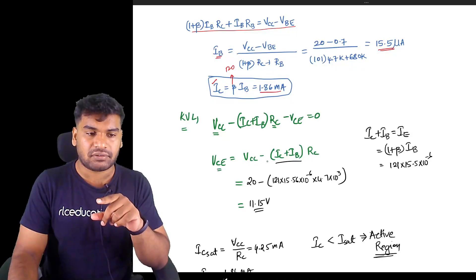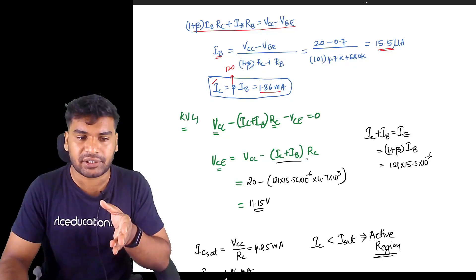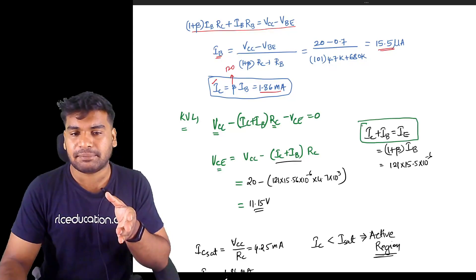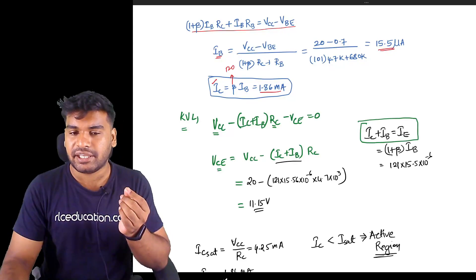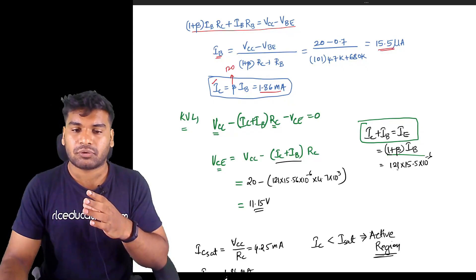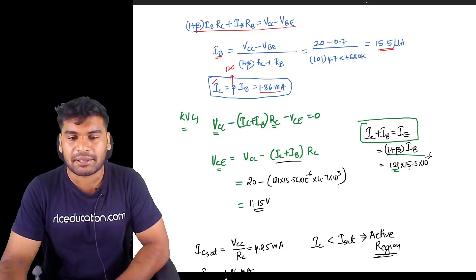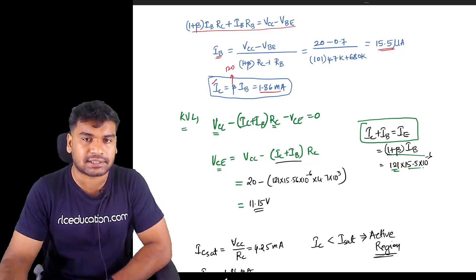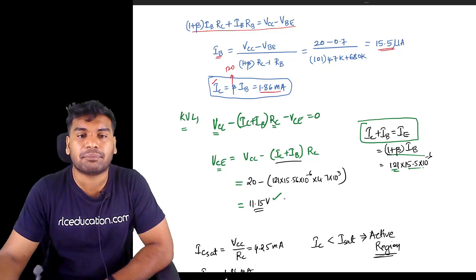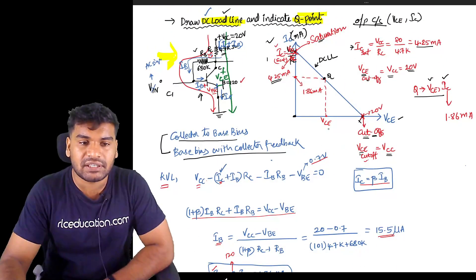Applying this new KVL, that will be equal to VCC minus (IC + IB) times RC minus VCE equals zero. From here, VCE equals VCC minus (IC + IB) times RC. We can write IC plus IB equals IE, and IE equals (1 + beta) times IB. So 1 plus beta is 121, IB is 15.5 times 10 to the power minus 6. Just substitute these values, then you will get VCE equals 11.15.